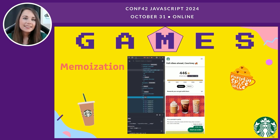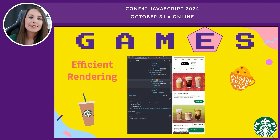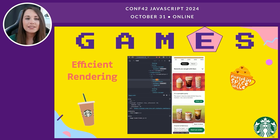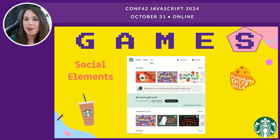For E — efficient rendering — Starbucks faces the challenge of managing high volumes of user interactions, especially during promotional events. The app likely employs React strategies like lazy loading and Suspense to handle these scenarios efficiently. Using code splitting techniques, Starbucks can load only the necessary pieces of code depending on user interactions. For S — the social elements — Starbucks encourages participants to send gift cards to friends through the app, and some games encourage users to share their progress on social media during promotional game periods.